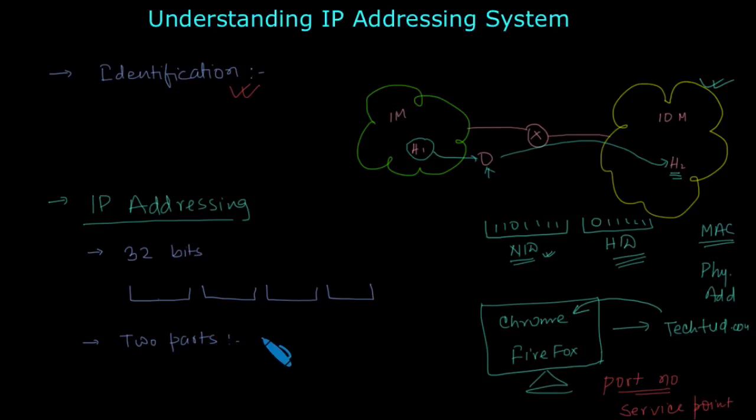These parts are NID, which is network ID, and HID, which is host ID. From these 32 bits, we take some bits as NID and some bits as HID. We will see how it is divided. For example, if I am using this first octet as NID, then the remaining are HID. Inside a network, the host IDs are unique. These are the fundamental things about IP addressing.